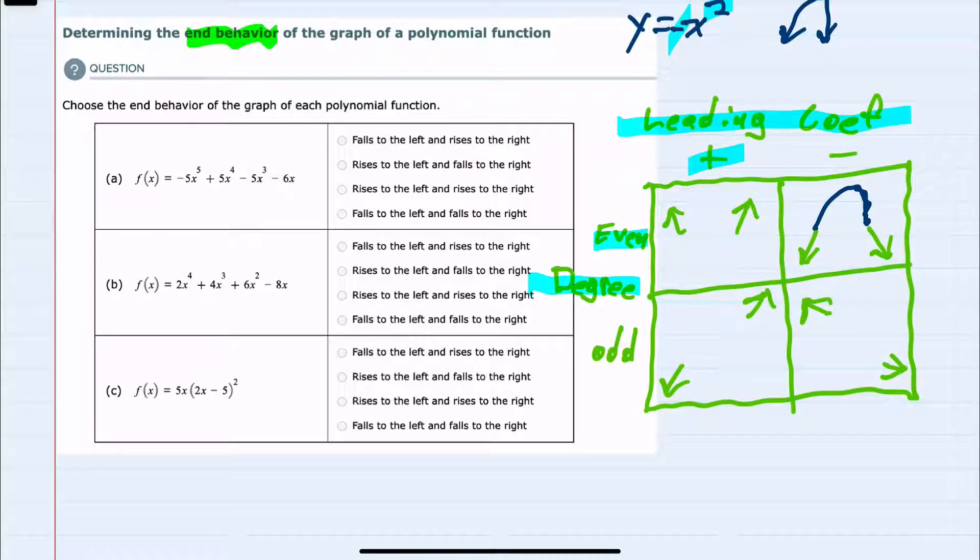So we looked at a basic function with an even degree, x squared. And we can see what happens on the left and the right when we change the leading coefficient from positive to negative. For the bottom two possibilities, we can just look at a line that has an odd degree.